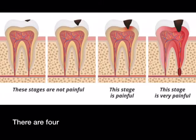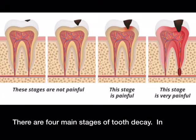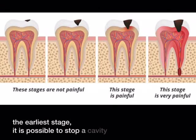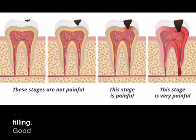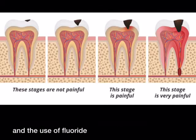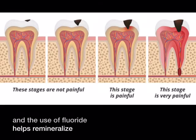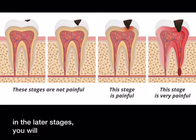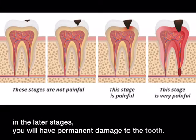There are four main stages of tooth decay. In the earliest stage it is possible to stop a cavity before it needs a filling. Good dental hygiene can stop the erosion and the use of fluoride helps remineralize the enamel. However, in the later stages you will have permanent damage to the tooth.